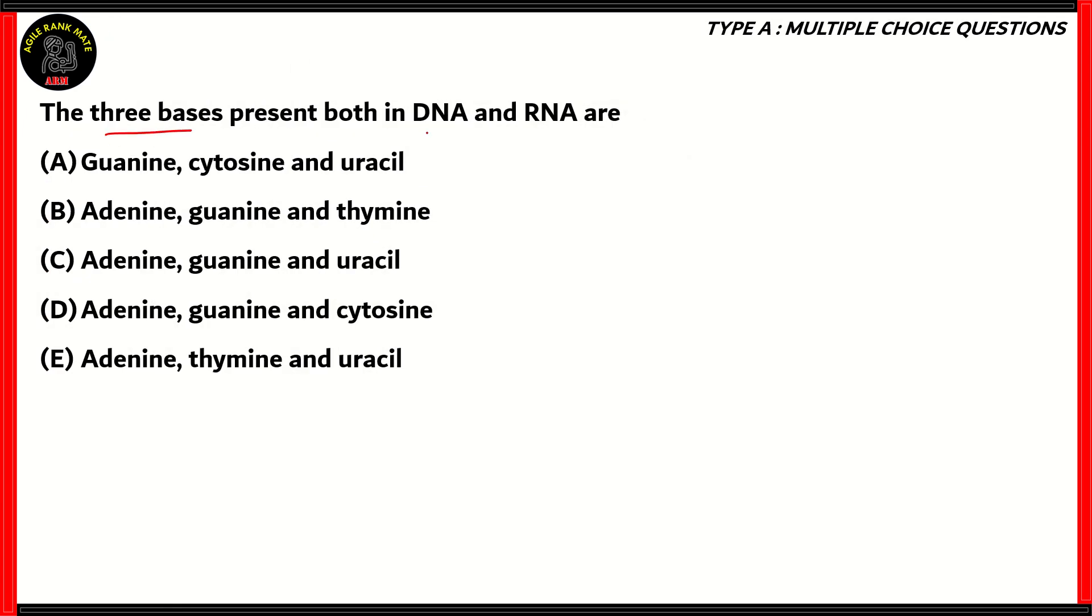Next question. The three bases present both in DNA and RNA are: guanine, cytosine, and uracil; adenine, guanine, and thymine; adenine, guanine, and uracil; adenine, guanine, and cytosine; or adenine, thymine, and uracil. So how do we solve this question? Well, for that, let's list out the four bases of both DNA and RNA.